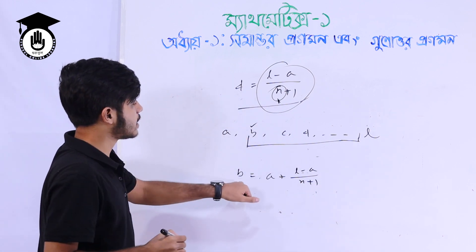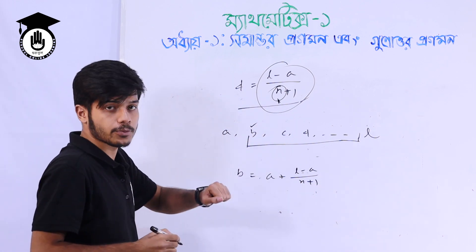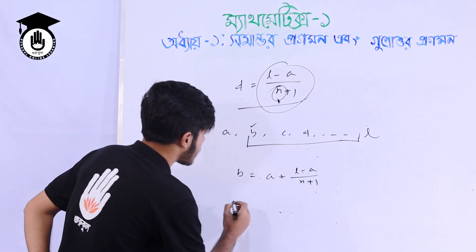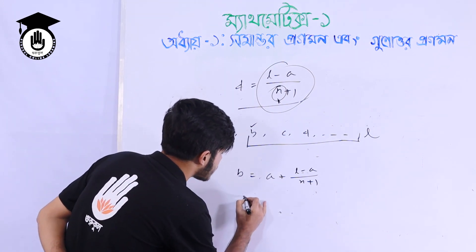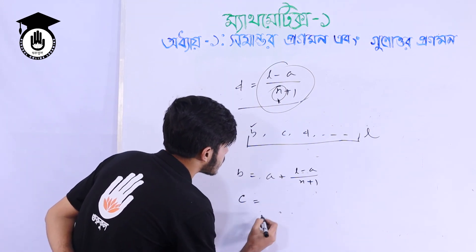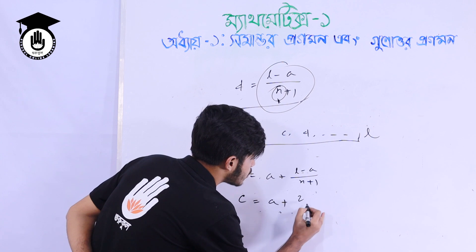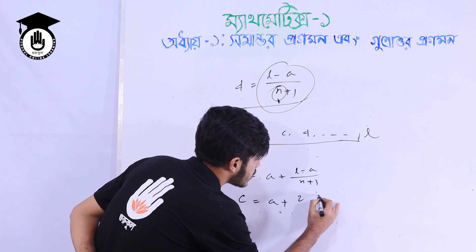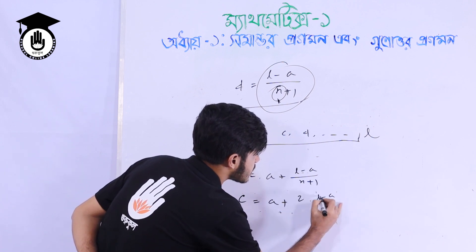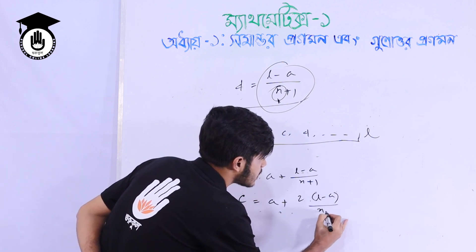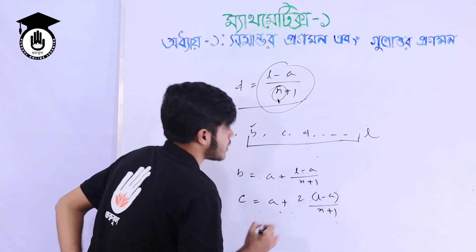This is the second step formula. Then the second step is: c equals a plus 2 into l minus a by n plus 1.